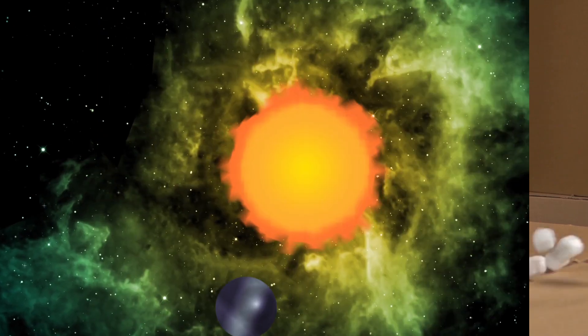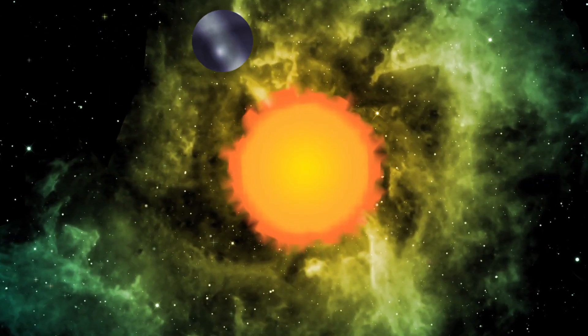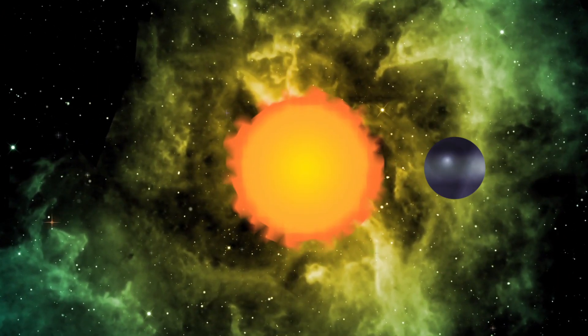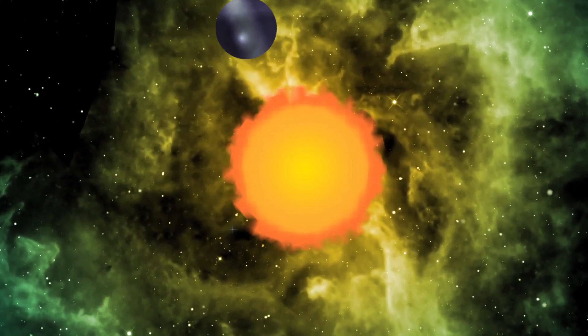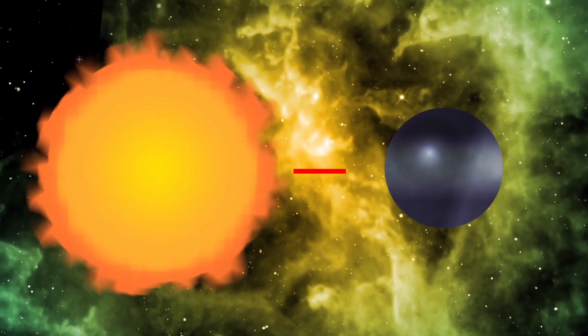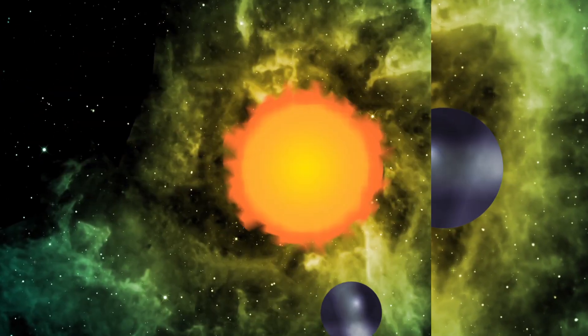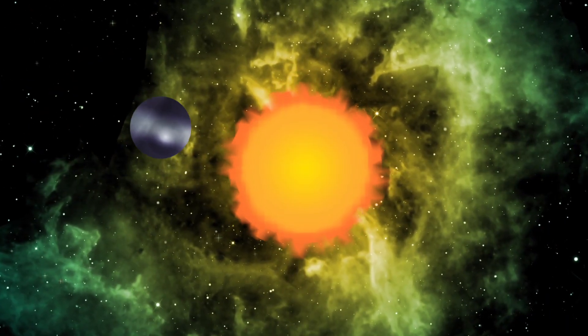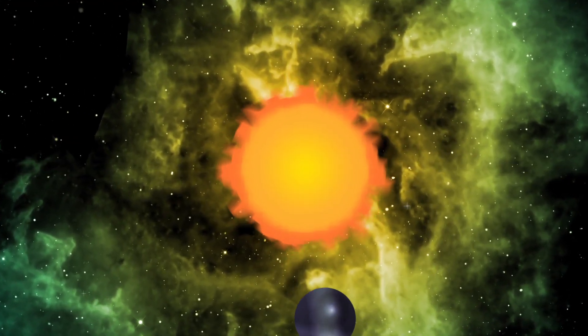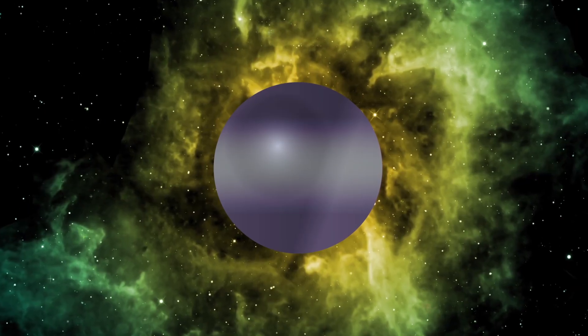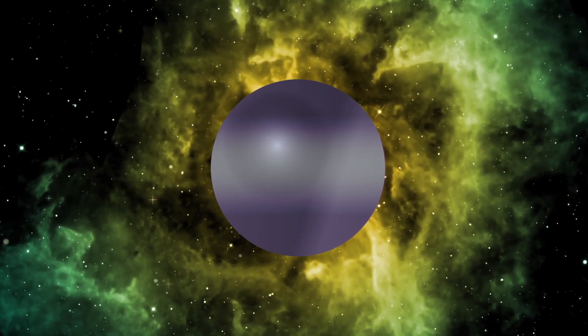This planet orbits around its host sun in the opposite direction, making it one of the few planets with a retrograde orbit. One explanation for this activity is due to it being close to its sun, as it's only 7 million kilometers away from it. This causes an intense gravitational pull, making it orbit in reverse. This is also the possible explanation as to why the planet is so big, yet lightweight, like HAT-P1b.